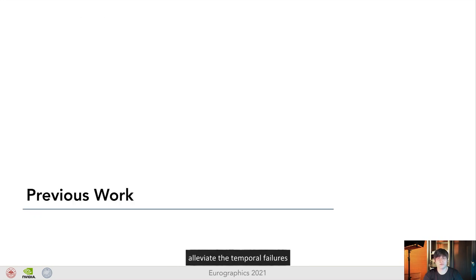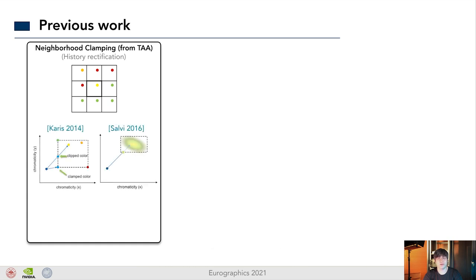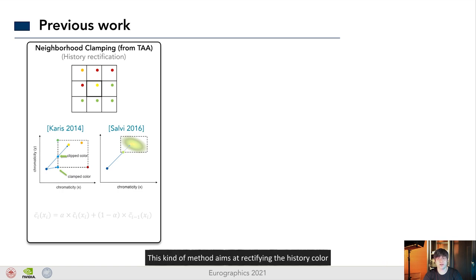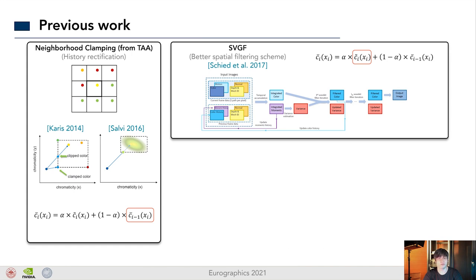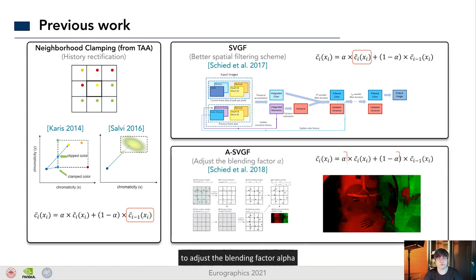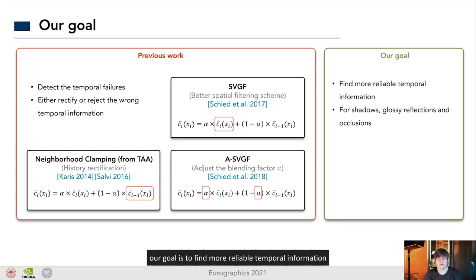Various methods are designed to alleviate the temporal failures. The neighborhood clamping method first gathers the color information from neighborhood pixels. Then, we compute an axis-aligned bounding box or Gaussian distribution of the colors, and clamp or clip the history color according to it. This kind of method aims at rectifying the history color to suppress the ghosting artifact. The SVGF method analyzes both spatial and temporal variance to get the shape and size of spatial filters. This method focuses on a better spatial filter scheme to acquire better current results. And the ASVGF method detects rapid temporal change to adjust the blending factor alpha to rely more or less on spatial filters, trading ghosting artifacts for noise. All of the previous methods are aiming at detecting the temporal failures, and either rectifying or rejecting the wrong temporal information.